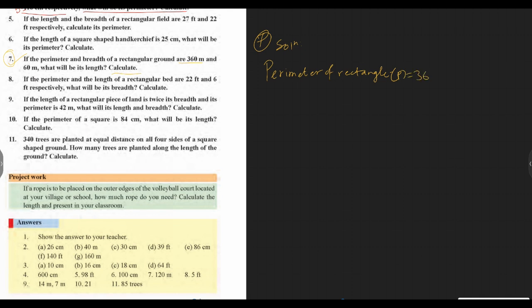P is equal to 360 meter, and its breadth b is equal to 60 meter. So the length l is equal to what? Using formula: P is equal to 2 times (l plus b).